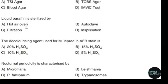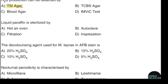Hydrogen sulfide production can be detected by. Correct answer: option A — TSI agar. Liquid paraffin is sterilized by. Correct answer: option A — Hot air oven.